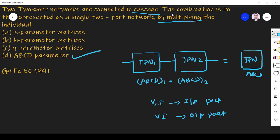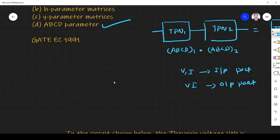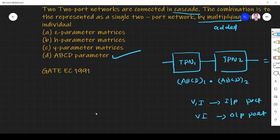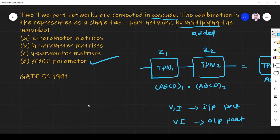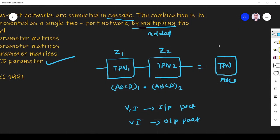Now suppose instead of multiplication, if the individual two-port network matrices are added, then the answer would be the Z parameter. So if individual Z parameters are Z1 and Z2, the overall Z parameter is equal to Z1 plus Z2.